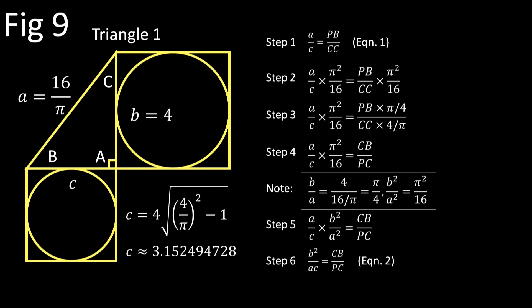But in Step 5 he commits an inappropriate substitution that would make Mr. Sprill cringe. Wolham notes that we know b/a = π/4, right? Then it follows that b²/a² = π²/16, right? So anywhere we see π²/16 we should be able to substitute b²/a², right? Wrong! You can't just go around willy-nilly changing constants into variables or ratios of variables, for that matter, especially if you don't know where those constants have been. You might as well pick up candy off the sidewalk and eat it.